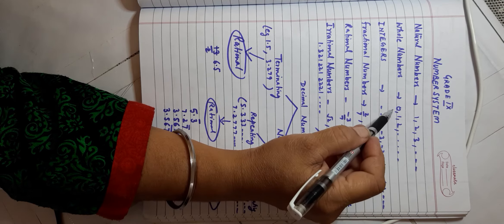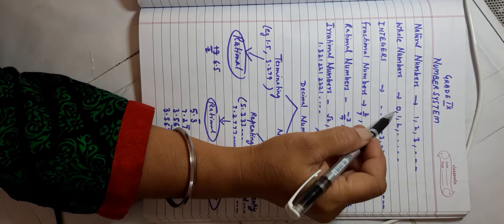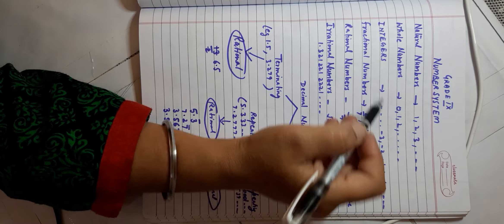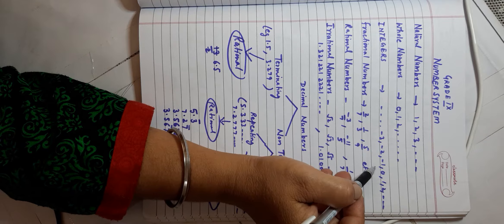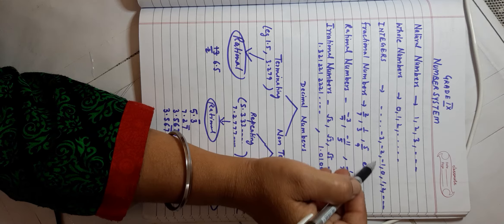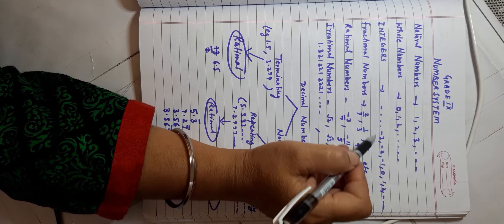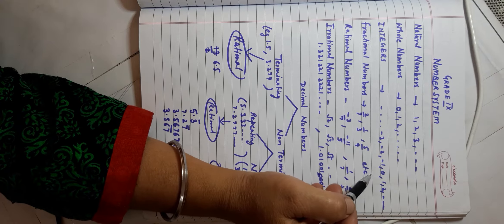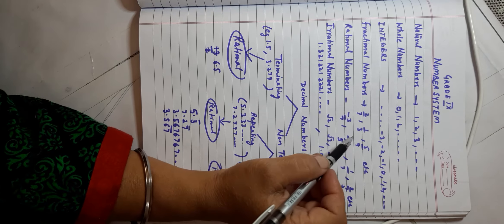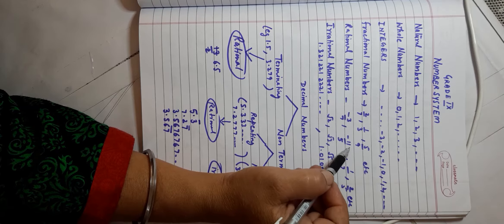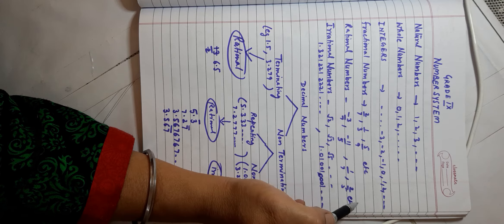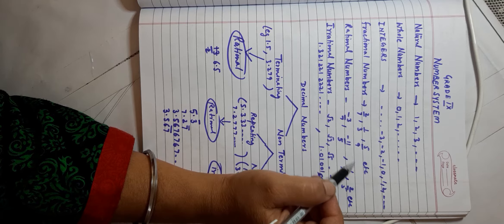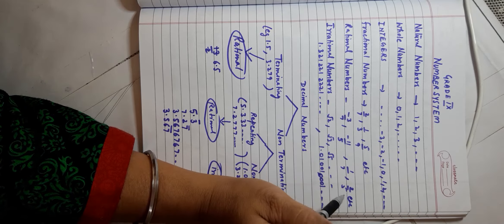Next come whole numbers. Whole numbers comprise 0, 1, 2, 3, 4, and so on — that is, when 0 was included in natural numbers, the whole set became known as whole numbers. With the introduction of negative numbers, we got the set of integers, which includes negative natural numbers, positive natural numbers, and 0. Then we were introduced to fractional numbers, for example 2/7, 1/7, 5/9, etc. When negative fractional numbers in the form p/q were also included, the whole set was named rational numbers.